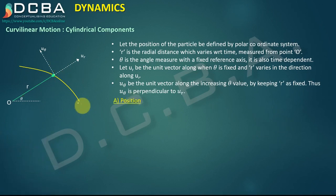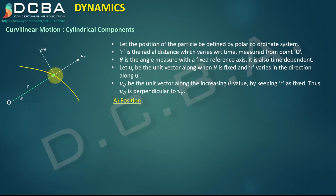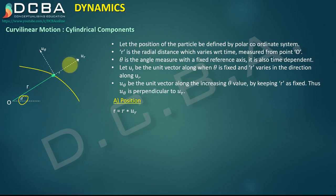Now let us define the position vector. Keeping θ fixed, the particle's position depends only on r, so the position vector is r·ur. The velocity is the time derivative of the position vector, dr/dt.